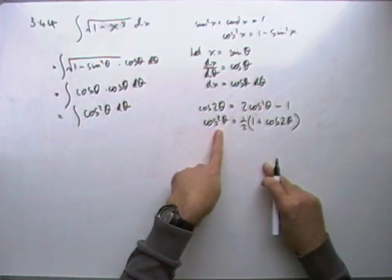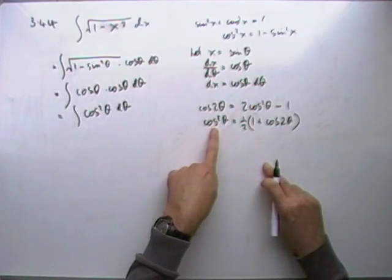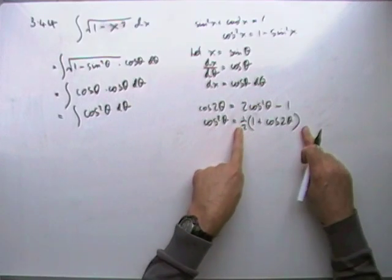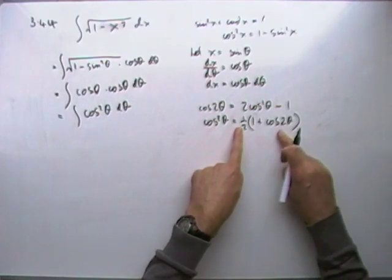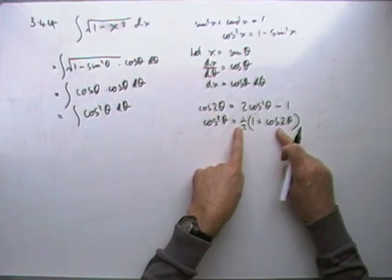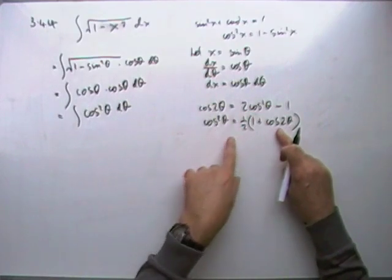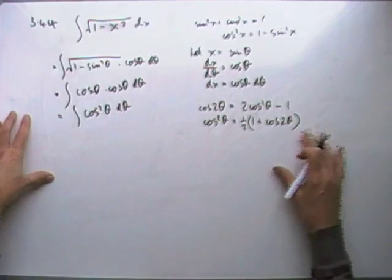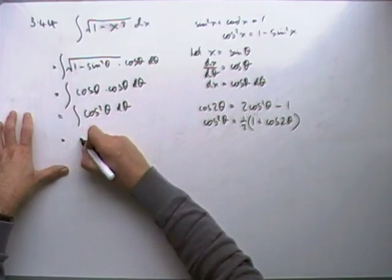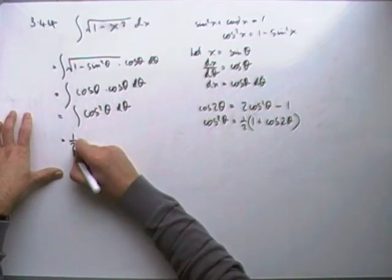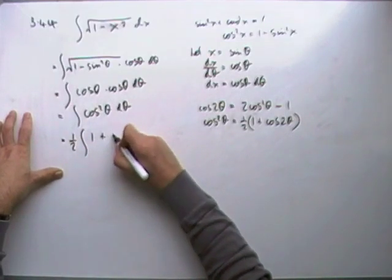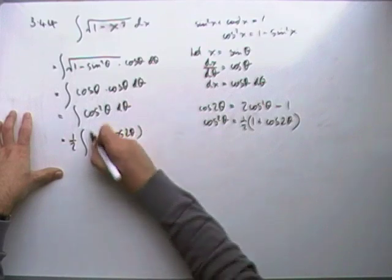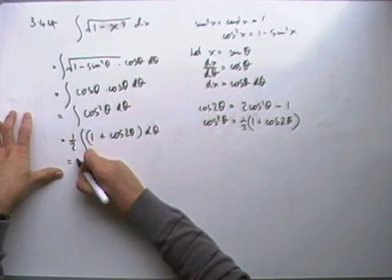And if it was cos to the power 4 θ, then I would just have the square of this. So to have the square of this part, that would still involve the square of cos 2θ, but then you just do this again, and that would end up with cos 4θs, and it'll all work out fine. Anyway, that's as far as I need to go. So I've got a half of 1 + cos 2θ.